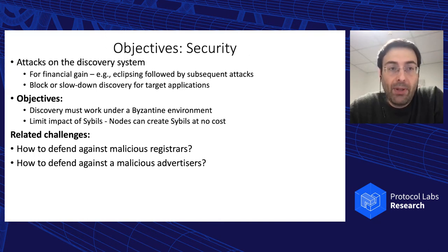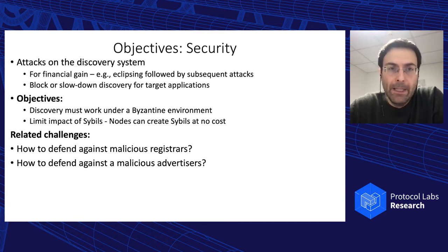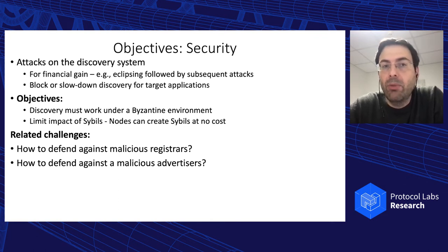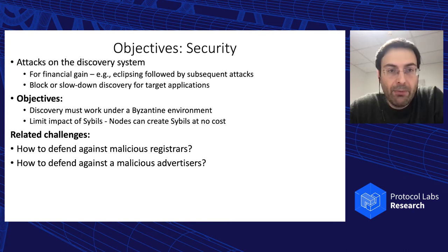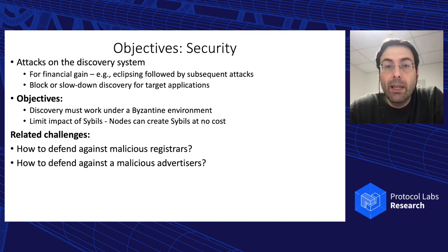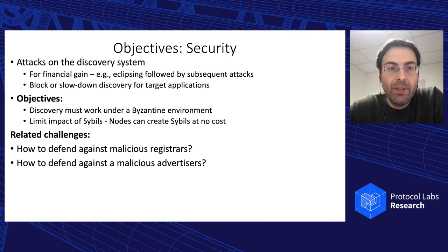Security is an important objective because adversaries have multiple reasons to attack the discovery system: one is for financial gain — for instance, once you eclipse a node you can launch subsequent attacks like double spending attacks. Another reason could be to block or slow down discovery for competing applications. The objective is therefore to have a discovery system that works under a Byzantine environment and limits the impact of Sybils. In an open decentralized system, nodes can just create Sybils at no cost.